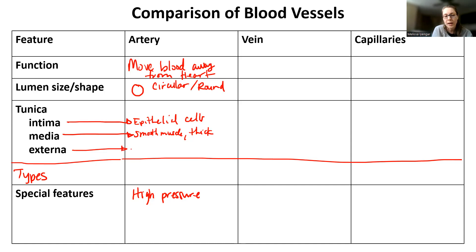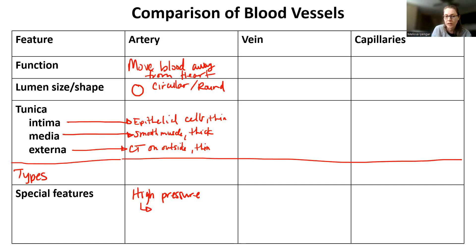The external layer is connective tissue on the outside, which is relatively thin. So the tunica intima is thin, the tunica media is thick, and the tunica externa is thin. Arteries always run under high pressure, and that high pressure can be regulated because of the tunica media. Another special feature is that arteries usually have elastic fibers in all layers.